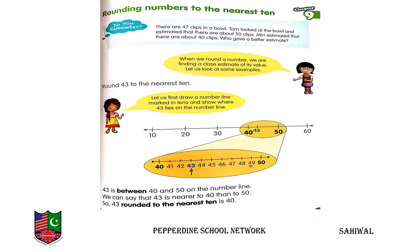From 40 to 50 we need to move 10 numbers. Counting from 43 to 50: 41, 42, 43, 44, 45, 46, 47, 48, 49, 50 — that is 7 numbers forward. And from 43 back to 40 — 1, 2, 3 — only 3 numbers. So the smaller number of moves is 3 toward 40, and 7 toward 50. We round 43 to the nearest 10, which is 40.